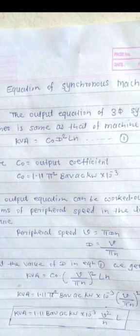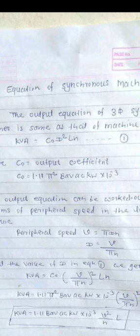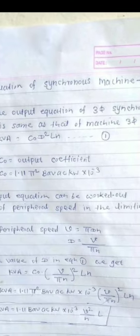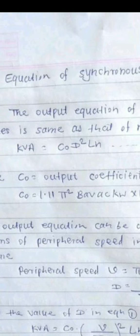The output equation of the synchronous machine is similar to that of the output equation of the three-phase induction motor, and that is: KVA = C₀ d² ln. We already derived that output equation of the three-phase induction motor. So how is it similar? Just see that.